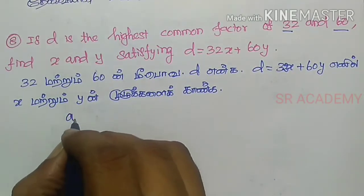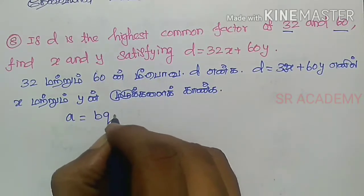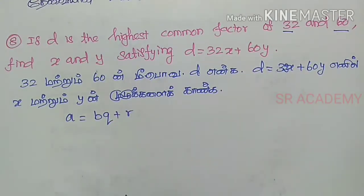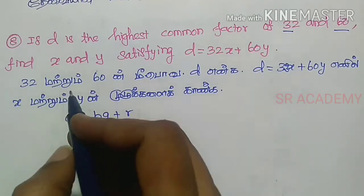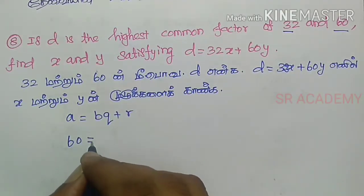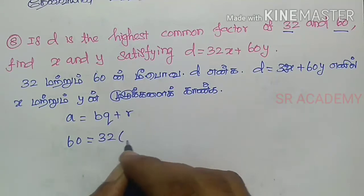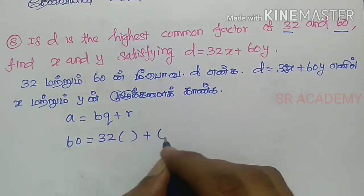First, use the formula A equals BQ plus R. Here, the larger number is A. So, 60 equals 32 times Q plus remainder R.